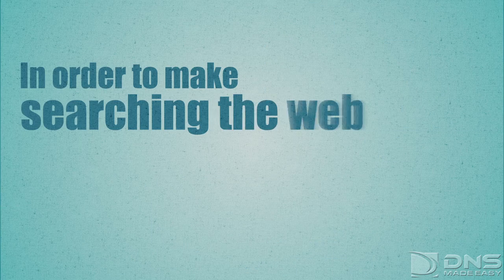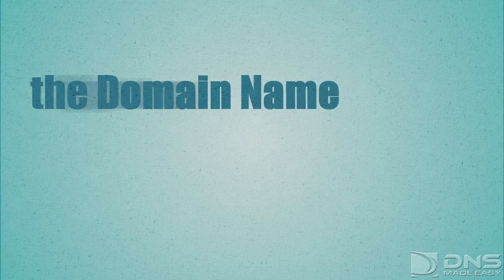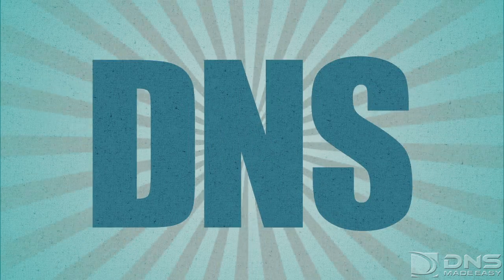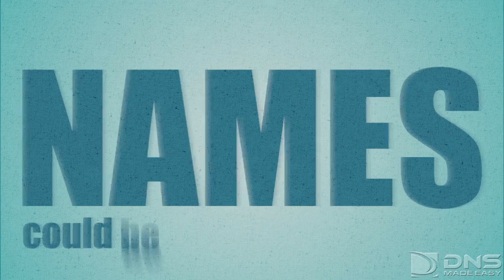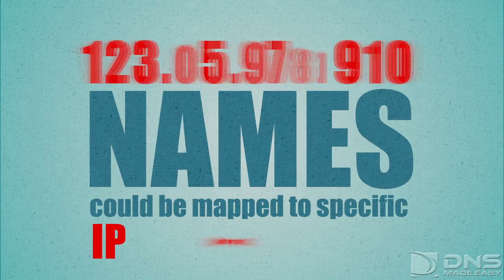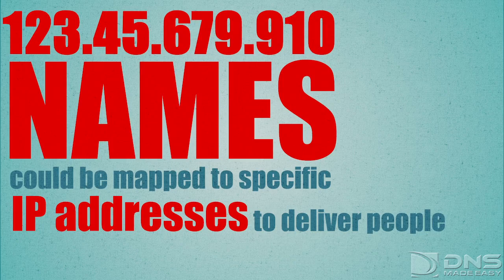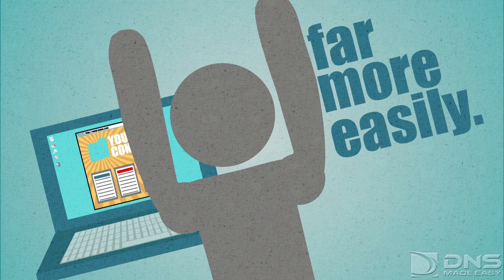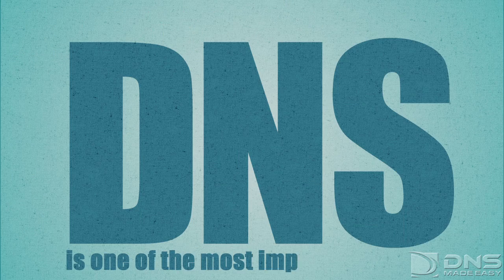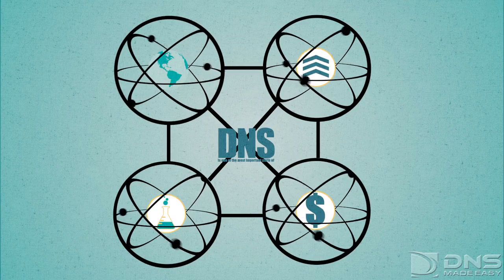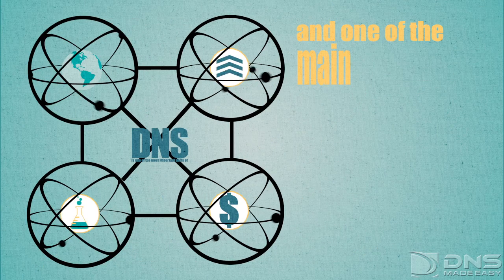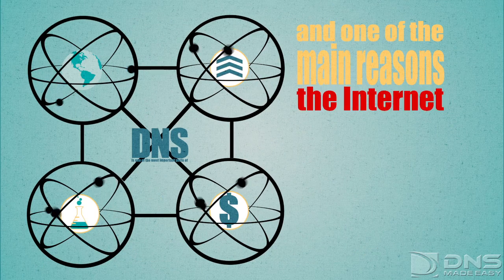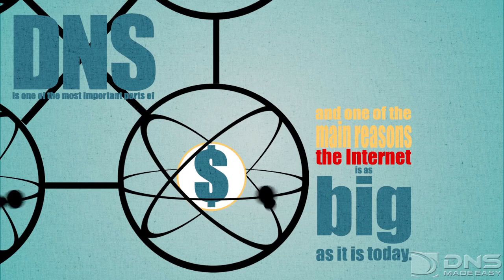In order to make searching the web easier for the public, the Domain Name System, or DNS, was born. Now, names can be mapped to specific IP addresses to deliver people to their content far more easily. In fact, DNS is one of the most important parts of the Internet, and one of the main reasons the Internet is as big as it is today.